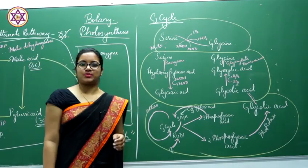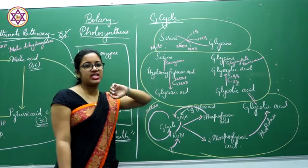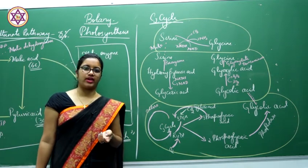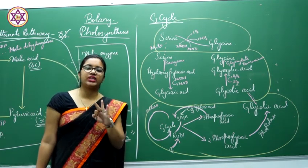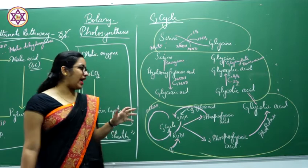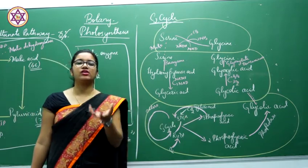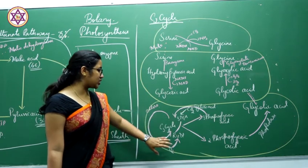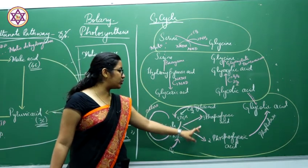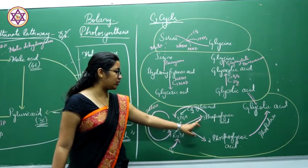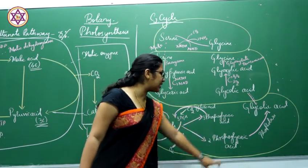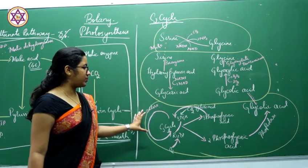The next topic is photorespiration, also known as C2 cycle. Photorespiration is a phenomenon wherein light is required. It involves 3 cell organelles: chloroplasts, peroxisomes, and mitochondria. What happens is when the concentration of carbon dioxide is very low, ribulose diphosphate combines with oxygen instead, producing molecules of phosphoglyceric acid.